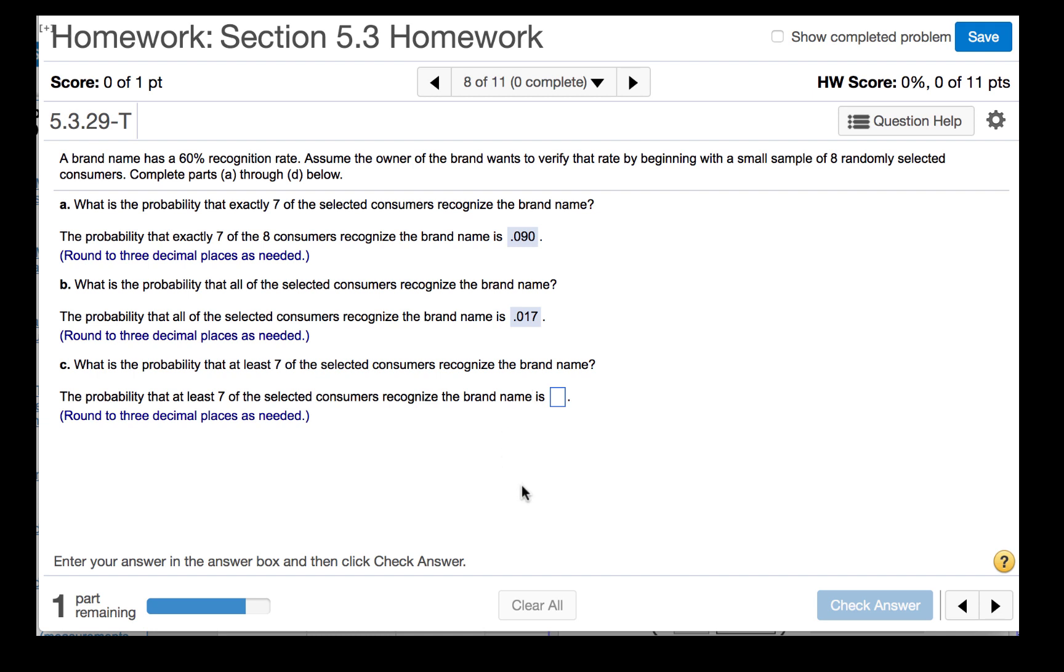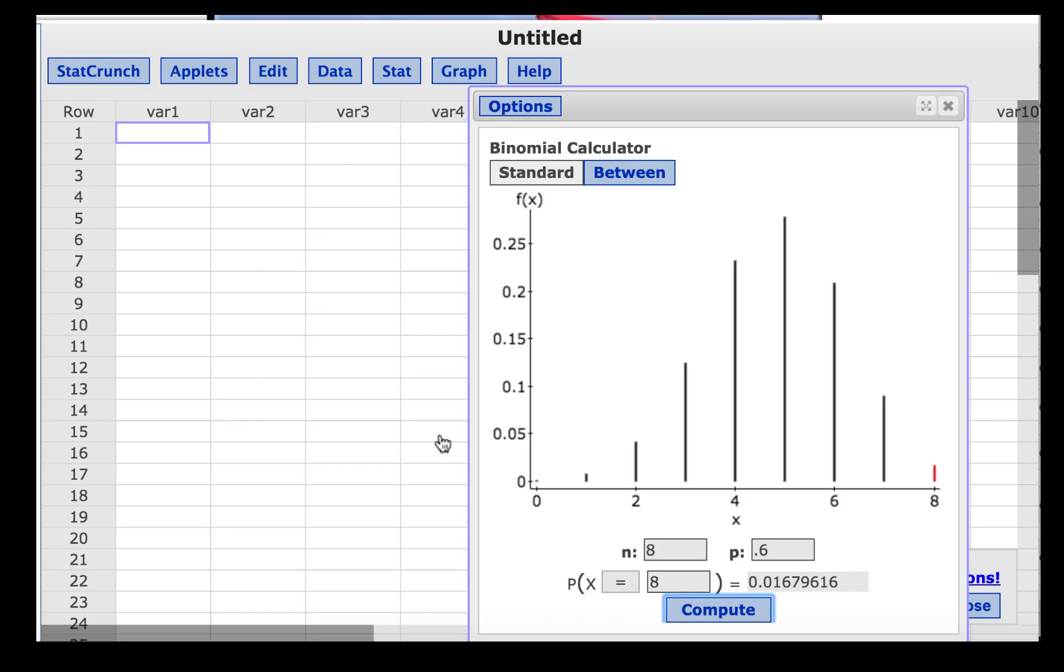What is the probability that at least 7 of the selected consumers recognize the brand name? At least means greater than or equal to. So we will change equals to greater than or equal to, and then the number of successes will be 7, and click Compute. And we find this probability to be 0.106.